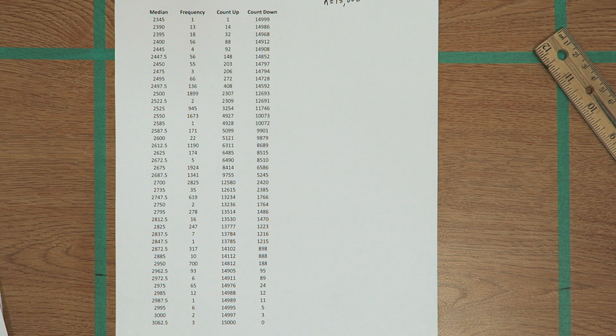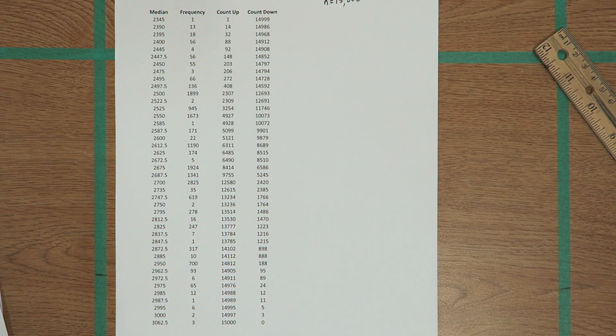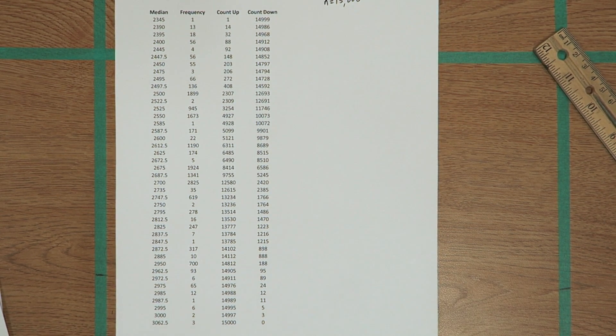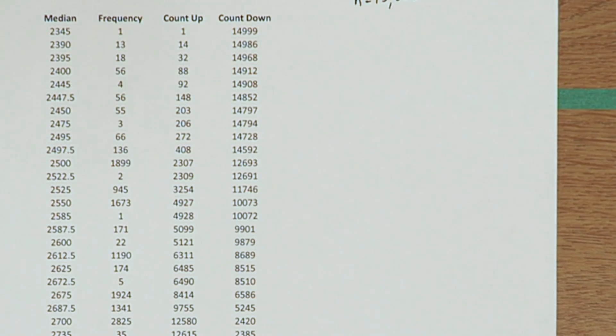In part D, they used the bootstrap process to create a frequency table. So what they did is they took samples of size 50 over and over from that website and calculated the sample medians and then arranged it in this frequency table. So I arranged the table into one big table instead of three columns like they had on the AP. And then I counted up and then I also counted down. So there was 15,000 total.